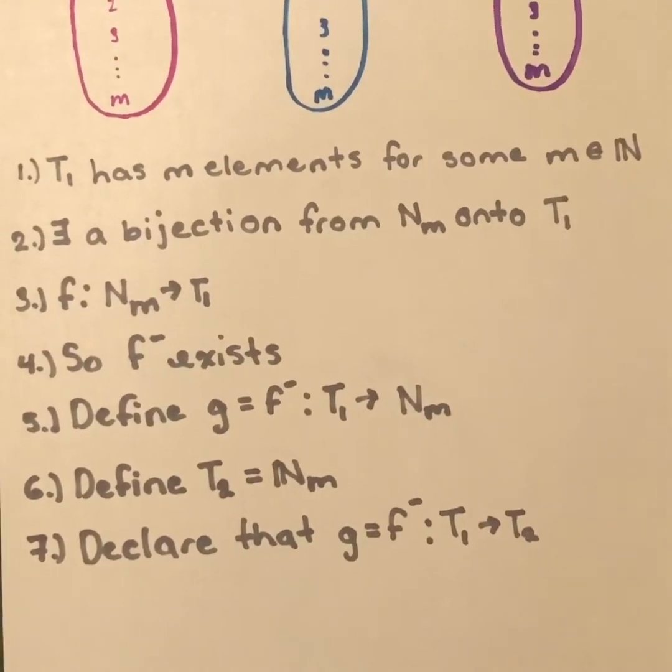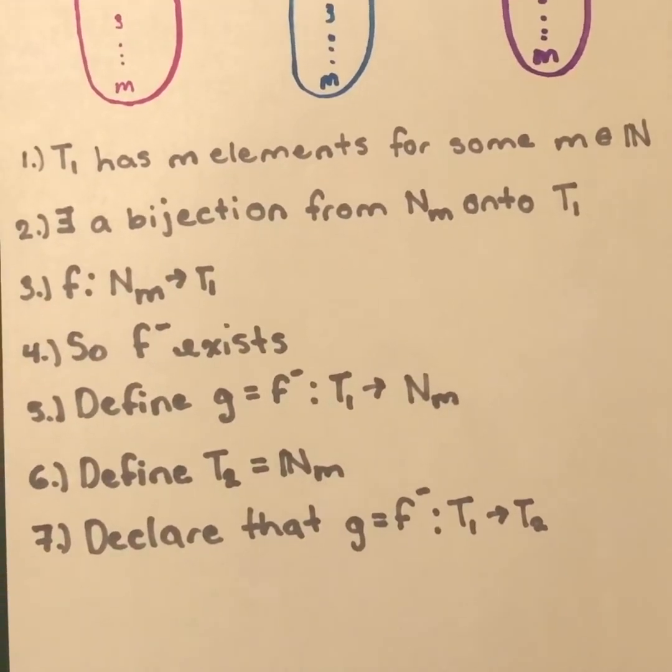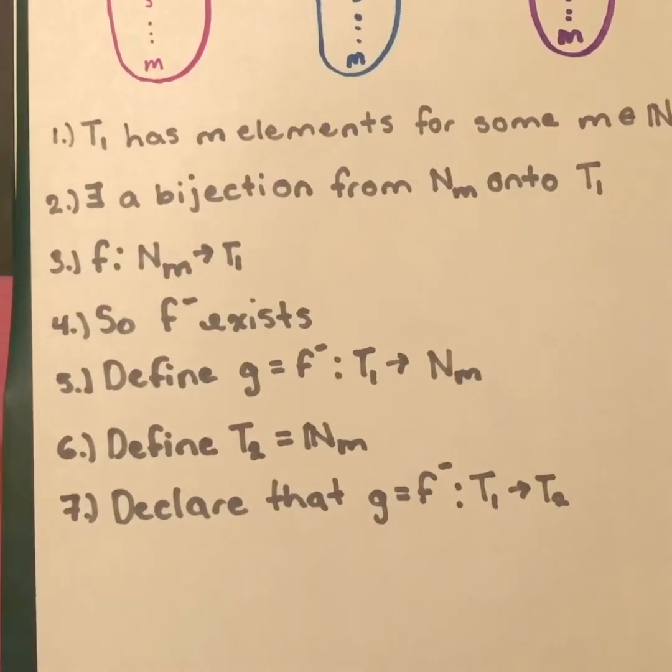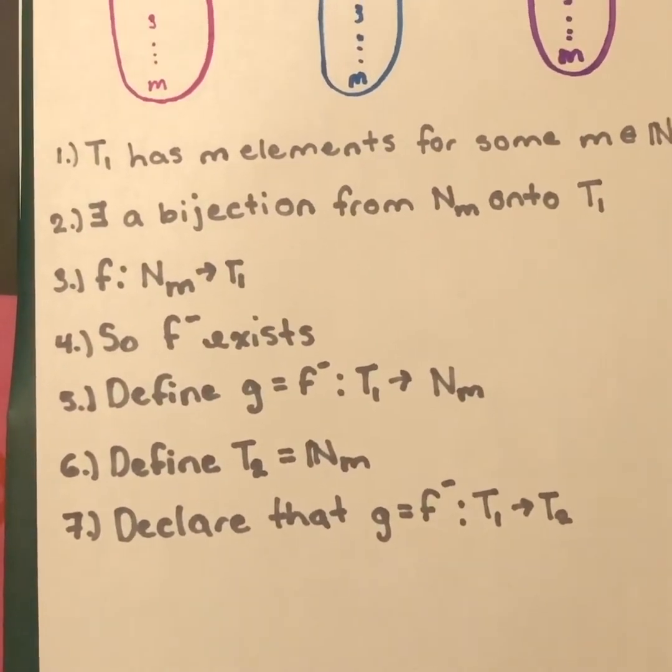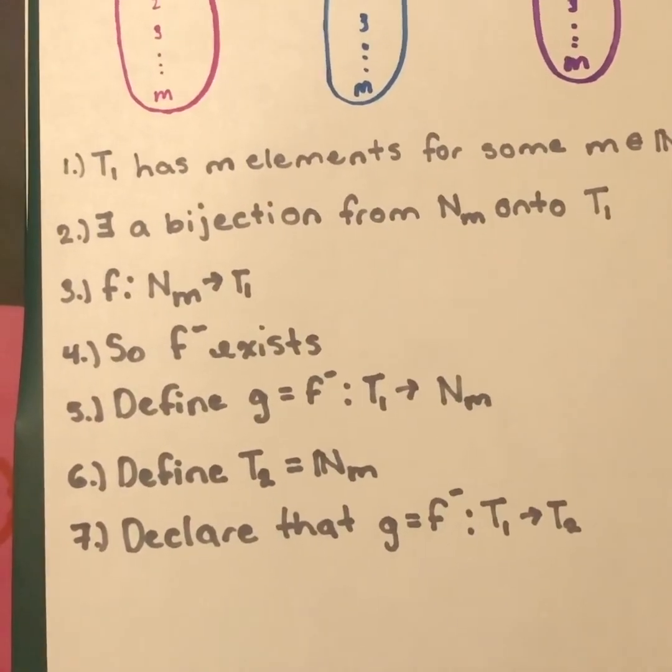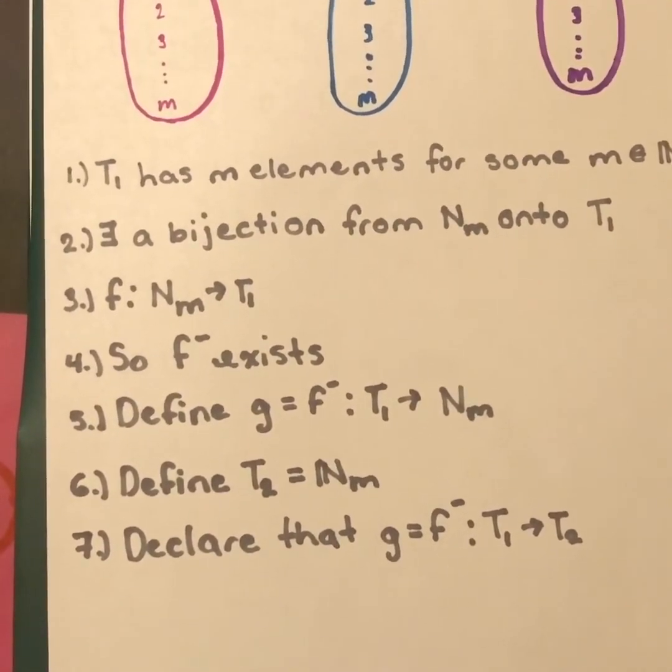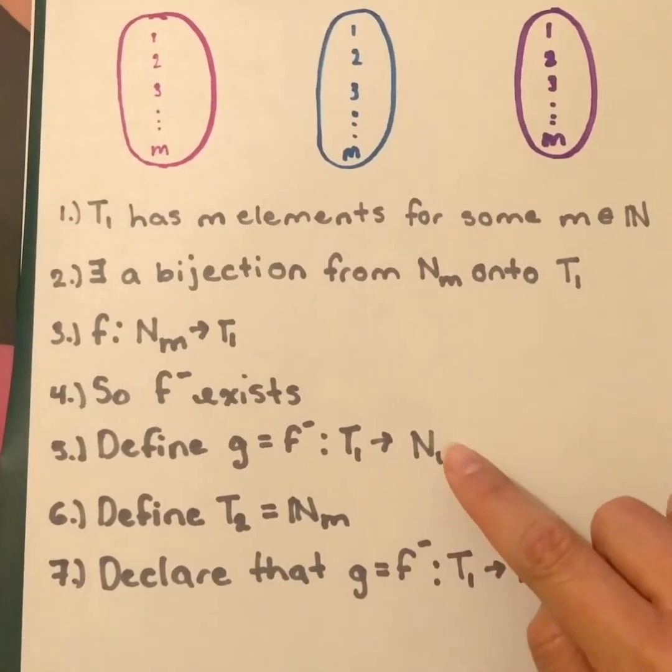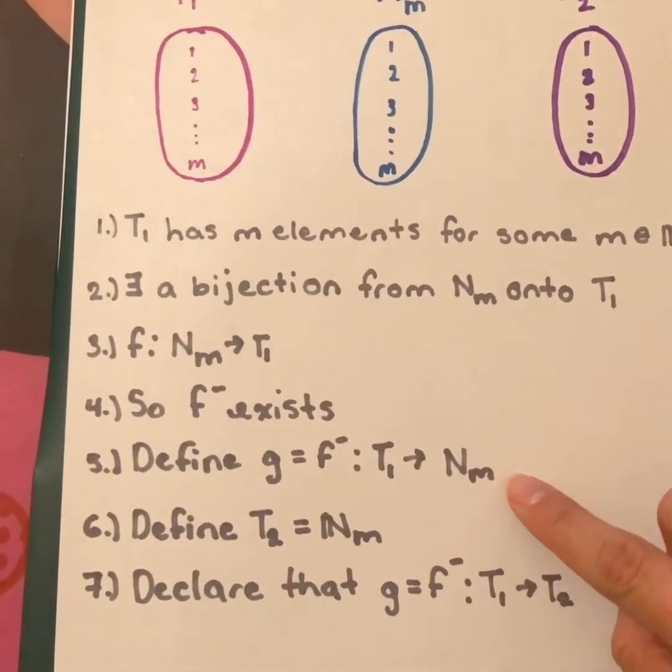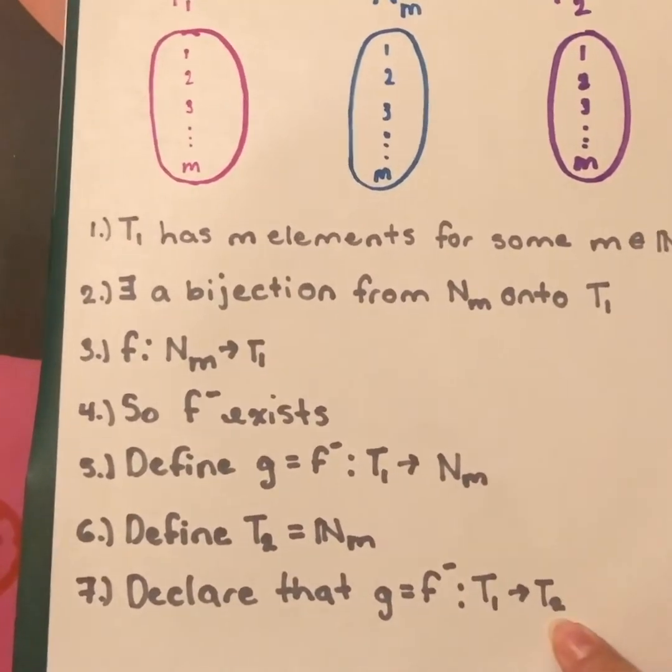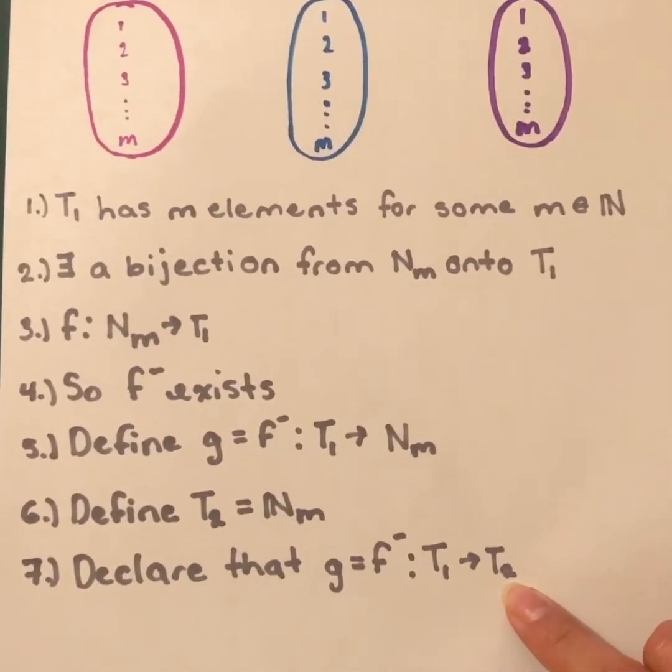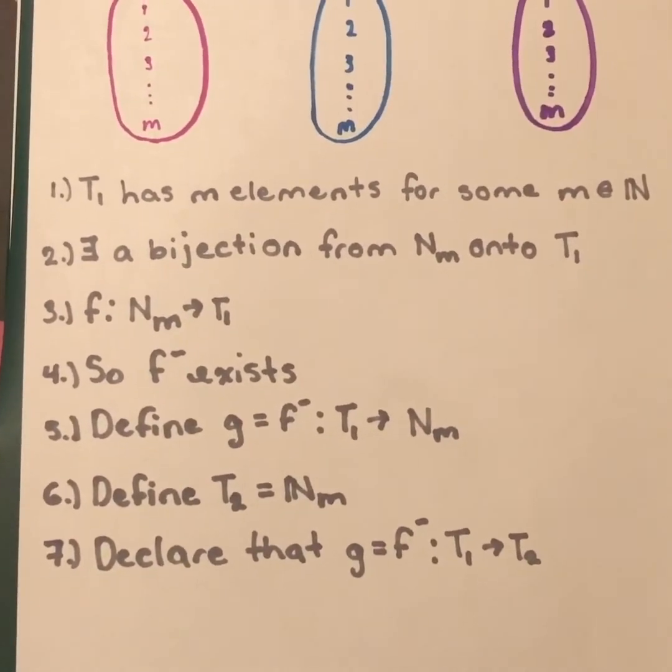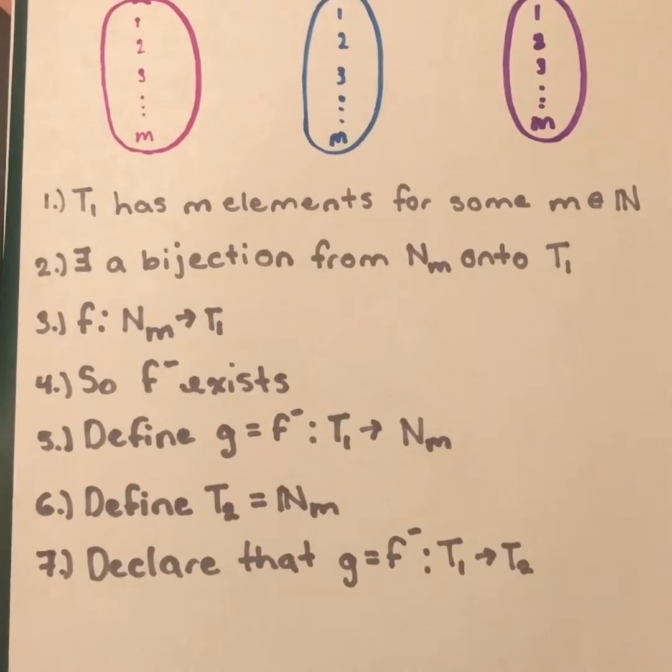Further, we can define T2 as a set of the natural numbers sub m, where g is equal to f inverse that goes from T1 to T2. And as you can see, all I did is replace this Nm for T2. And we have proven that there exists a bijection from T1 onto a finite set T2.